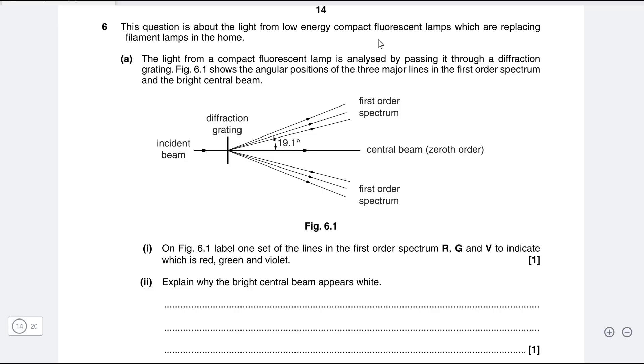Okay next one which is about diffraction gratings. So this question is about light from a low energy compact fluorescent lamp which is replacing filament lamps in the home. Okay so we have the incident beam is passing through a diffraction grating and then it's splitting into first order spectrum with the central beam. Now because we have multiple different arrows we can see that the different colors are going to split by a different angle.